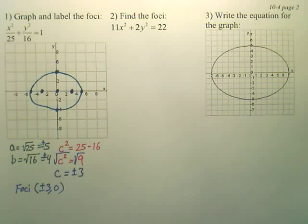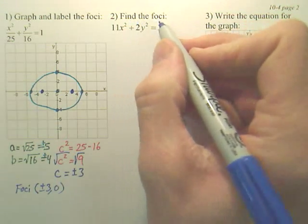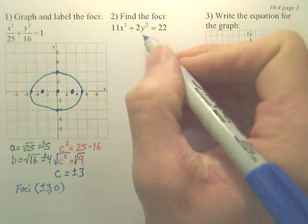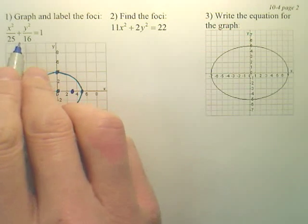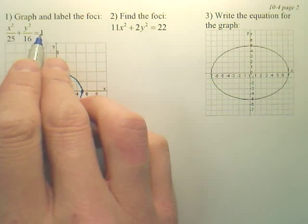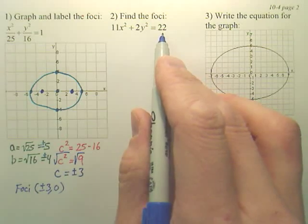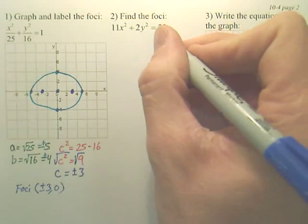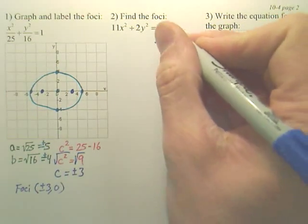All right, now the next one, all I want to do is find the foci of this one. Now is this in the same form as this? No. But can I change this to look like this? Yeah, the key to change this to look like this is to make it equal to 1. Here I'm equal to 22. I want to equal 1. What do I do? Well if I just divide it by 22, is that 1? Yeah.